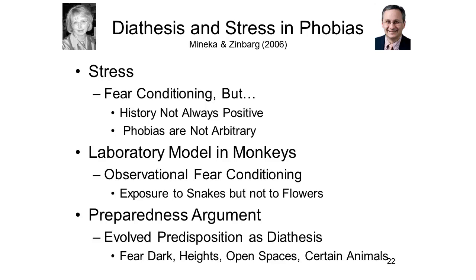That answer comes in large part from work on the social learning of fear in monkeys — work by Susan Meinica. She demonstrated observational fear conditioning. Monkeys are not naturally afraid of snakes, but they can acquire that fear by being exposed to another monkey who is afraid of snakes. Observing another monkey react fearfully in the presence of a snake will lead a naive monkey to acquire the fear of snakes as well. There's no direct experience here, but the fear is acquired through observational learning. And there's no reason to think that phobias can't be acquired exactly the same way — vicariously, by observing other people who have the same phobia.